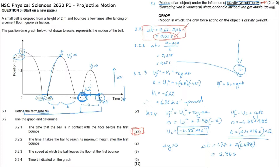Question 3.2.2 is similarly easy but worth two marks, meaning you must show a calculation before the final answer. Both of these questions require correct units — in these cases, seconds — since an answer in physical sciences is only correct if the correct unit is given.